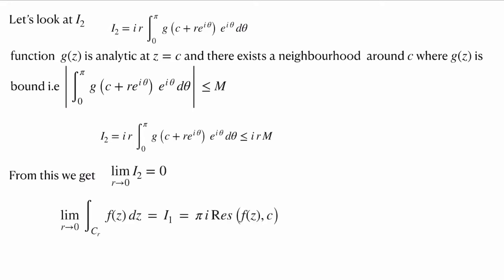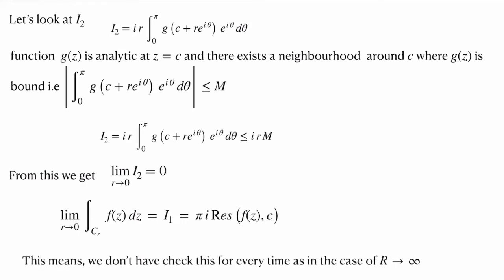So we have the result: the limit as r → 0 of the integral along contour c_r of f(z) dz equals π·i times the residue of f(z) at z = c. One advantage of this result is that once we use the indented contour, we know the value of the integral and can straight away apply this theorem. However, for the outer contour taken to infinity, every time we have to evaluate and ensure it goes to 0 as R → ∞. Let us look at a quick example.